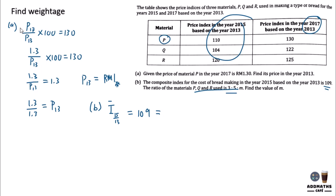We have the weightages over here: 3, 5, and M. So we have 110 times 3 plus 104 times 5 plus 120 times M over 3 plus 5 plus M, and it is equal to 109.